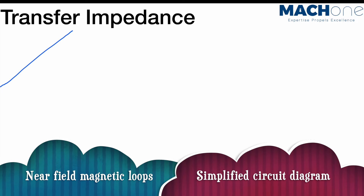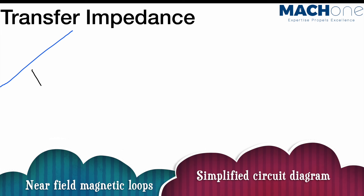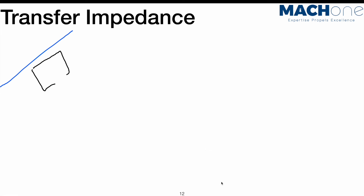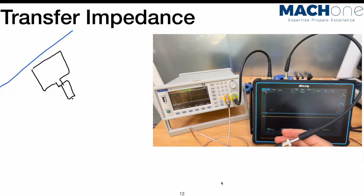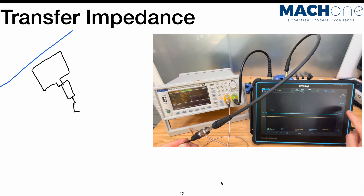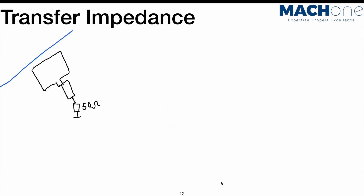We start with the first method: when we have a small square loop connected to a coaxial cable, which is then connected to the 50-ohm input impedance of the oscilloscope, and we look at the waveform by doing this. What happened is you've got an RF signal going through the wire under test and then you measure something.